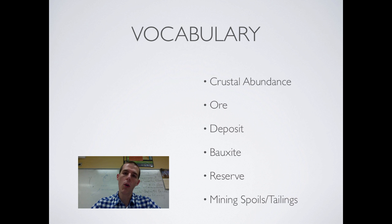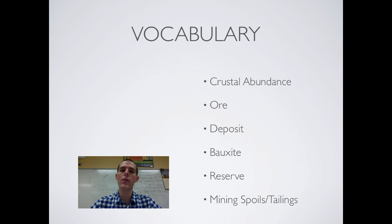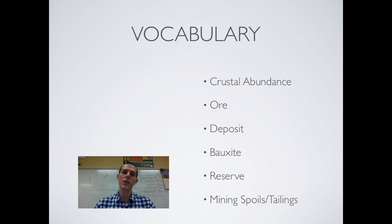Then you've got ore. Ore is any mineral that contains a precious metal or something that miners are looking for. If you think about a bunch of rocks, within those rocks could be contained a precious metal — it could be gold, it could be iron, it could be aluminum, whatever. Those rocks and the surrounding materials and minerals that contain the thing you are after, that is known as ore.